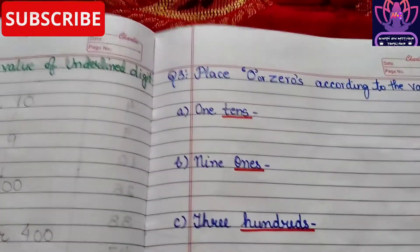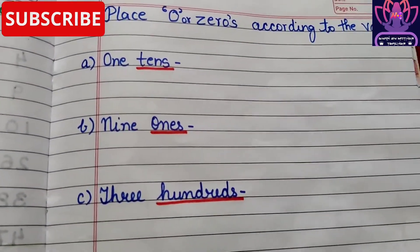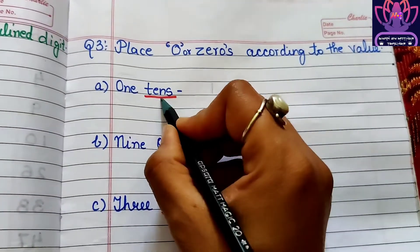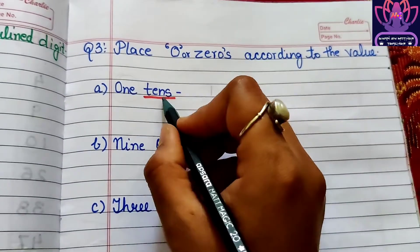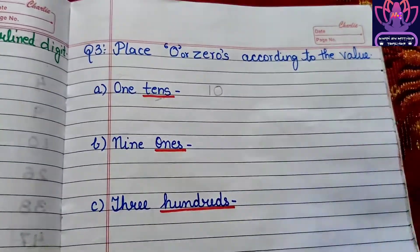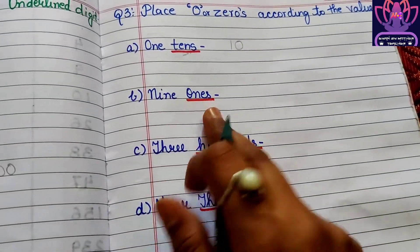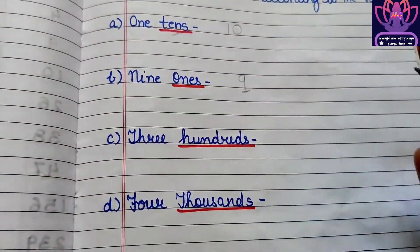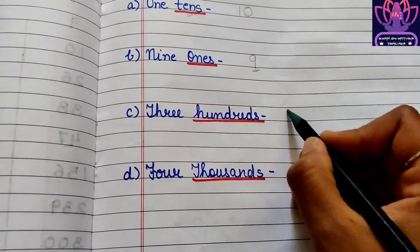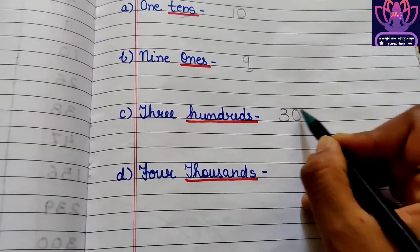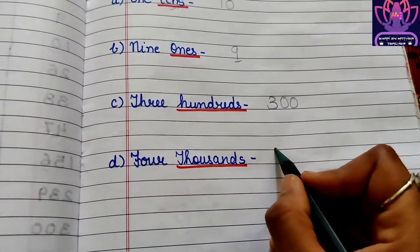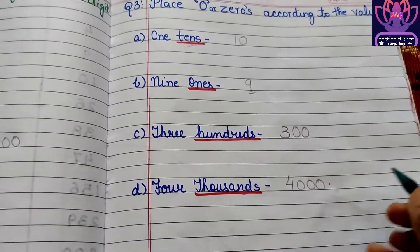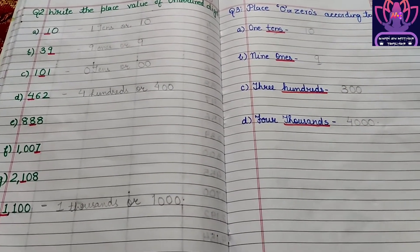Let's move to the third worksheet: place zeros according to the value. For one Ten, write 1 and add one zero. For nine Ones, no zero is added. For three Hundreds, add two zeros. For four Thousands, add three zeros. In this way you can solve many questions and practice daily.